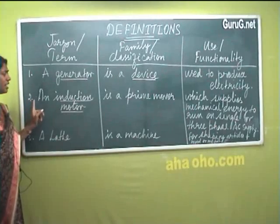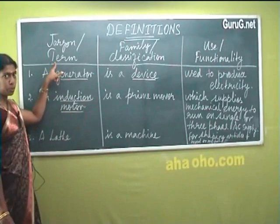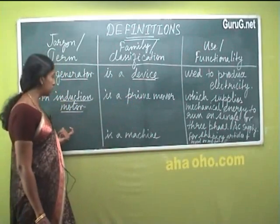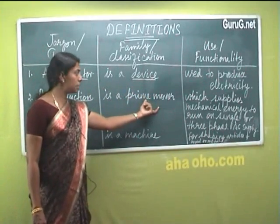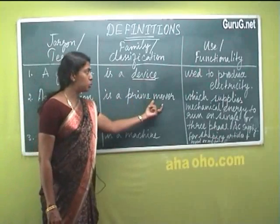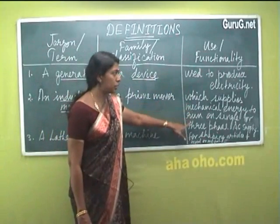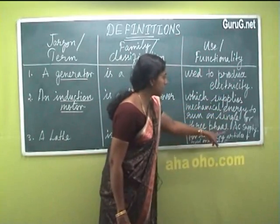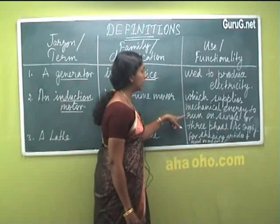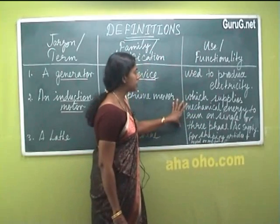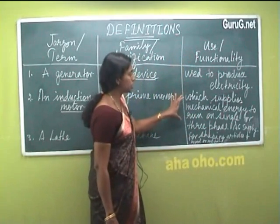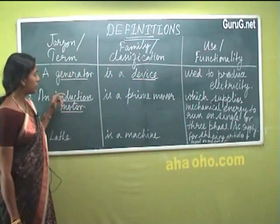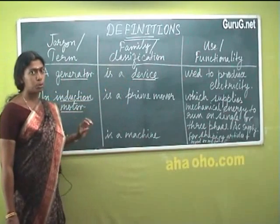Let us go to the next example: an induction motor. Induction motor is the term we have taken for defining. It is described as a prime mover — a phrase which describes the term. An induction motor is a prime mover which supplies mechanical energy to run on single or three-phase AC supply. When I say 'which supplies mechanical energy to run on single or three-phase AC supply,' I am describing the functionality — how it functions and what it is used for. This definition of the induction motor also has all three components.